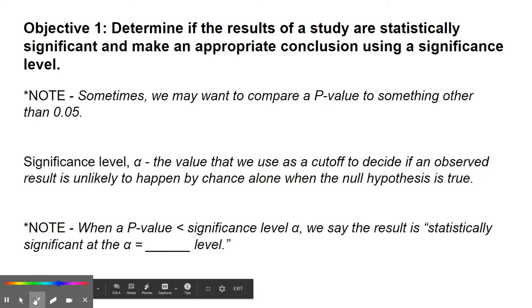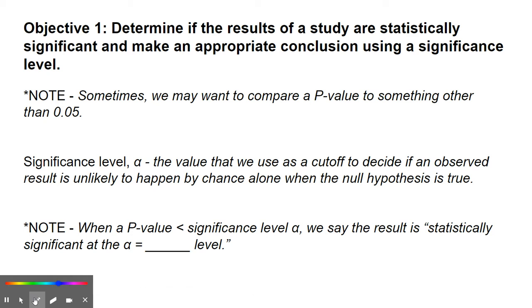It says: note, sometimes we may want to compare a p-value to something other than 0.05. In the last section, to decide if the p-value was larger or small, we compared to 0.05.